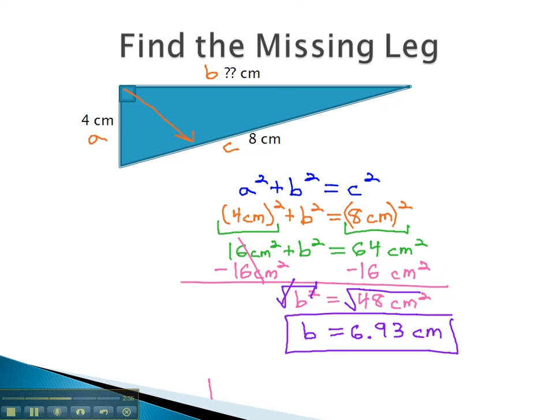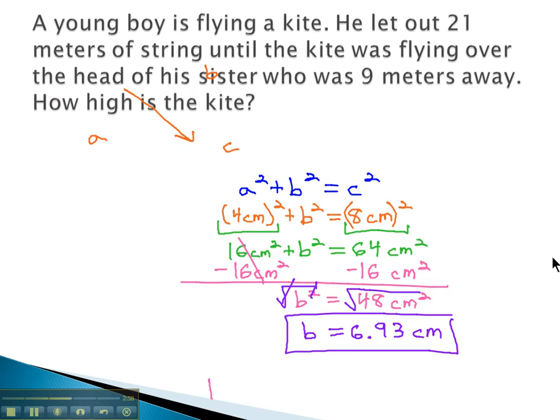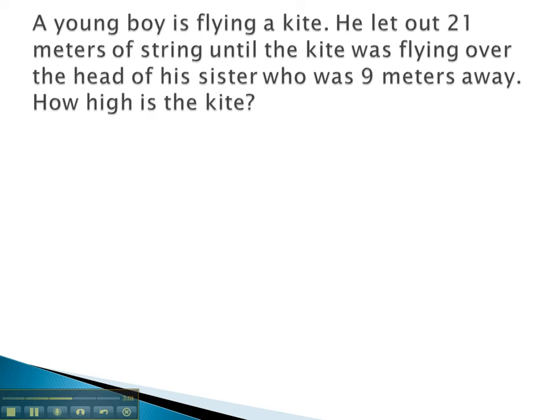Let's look at one more example. In this example, we have a boy flying a kite. He lets out 21 meters of string until the kite was flying over the head of his sister who was 9 meters away. We want to know how high is the kite. So here's our little boy flying a kite. Nice little kite there. And here's his sister. Kite's right above her.